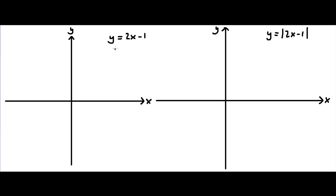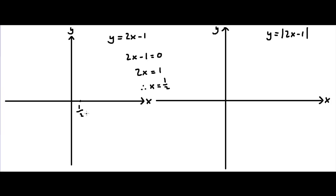Now, what happens when y is equal to 0 in this equation? Well, 2x minus 1 is equal to 0, so 2x equals 1. Therefore, x is a half. So we know that this line, y equals 2x minus 1, goes through the coordinate (1/2, 0).